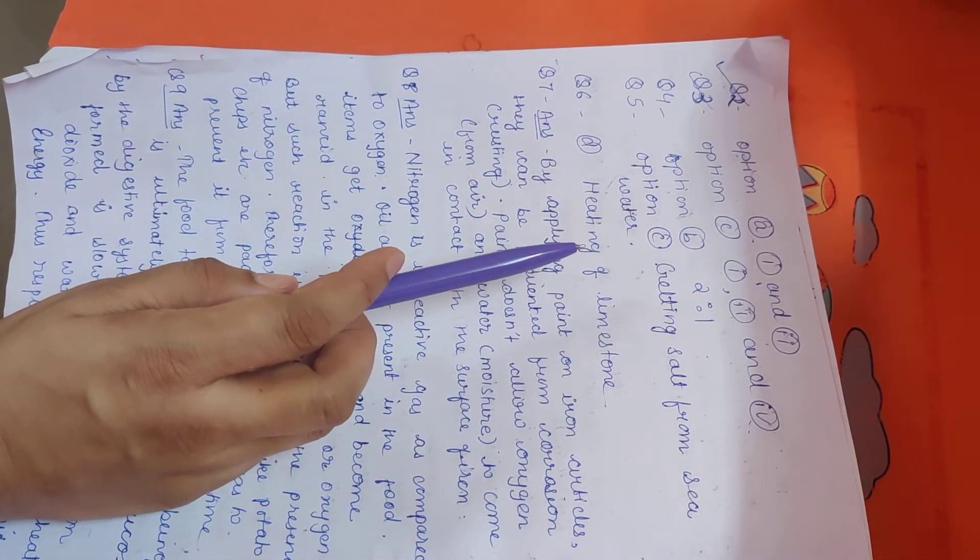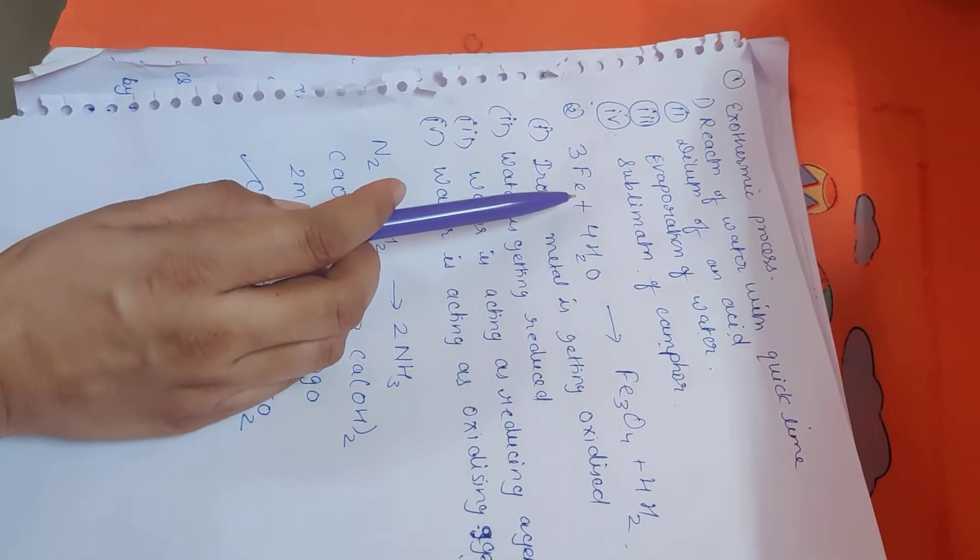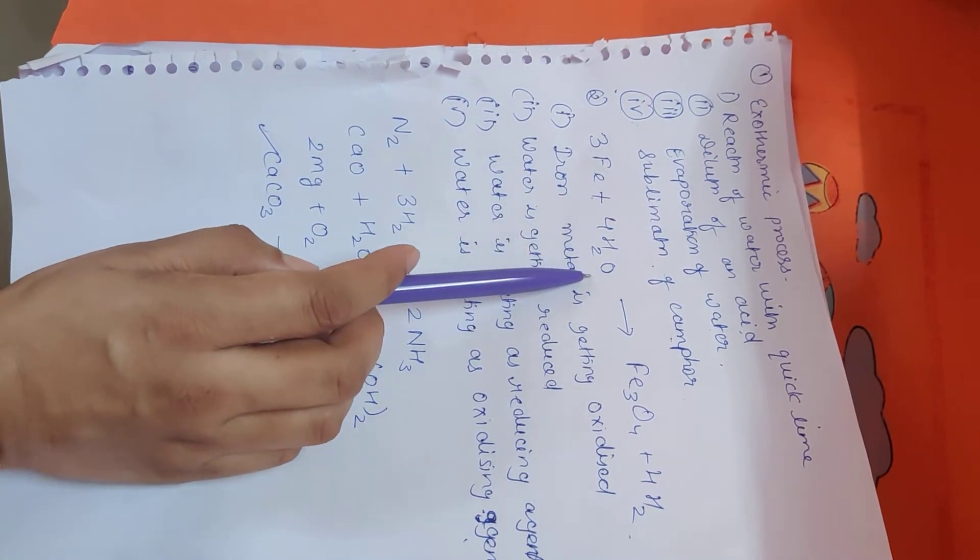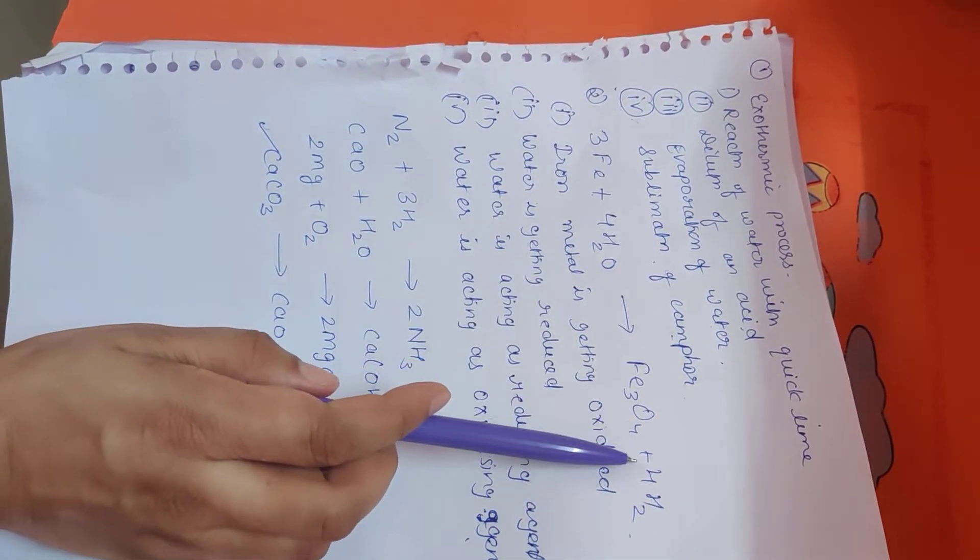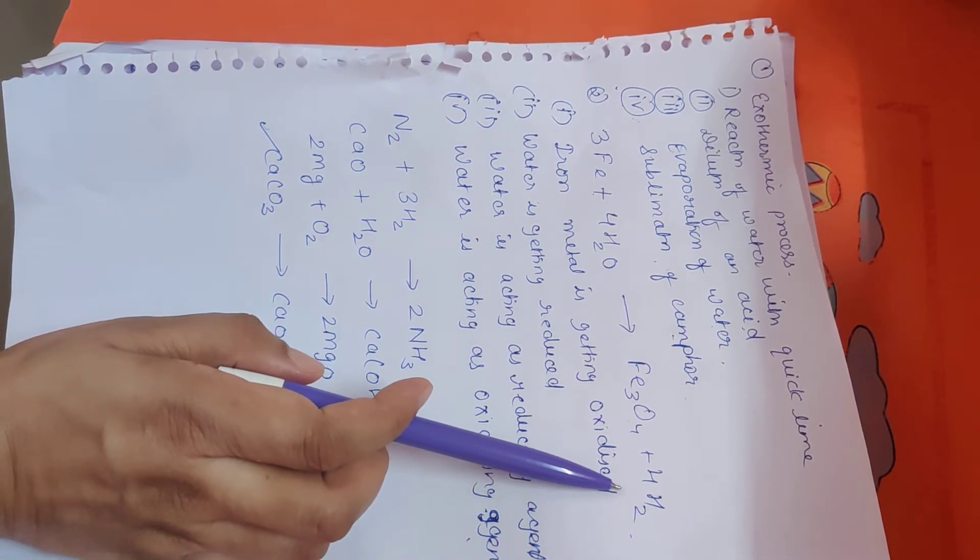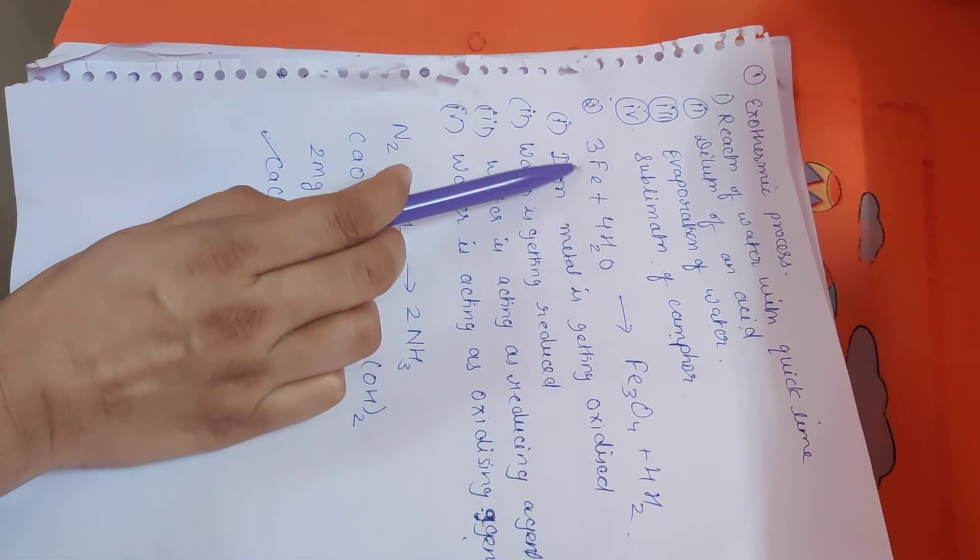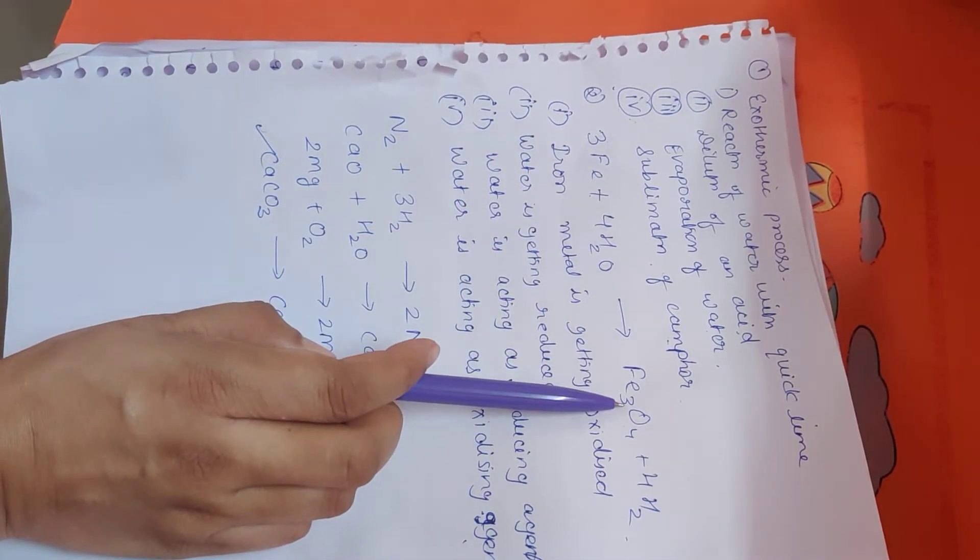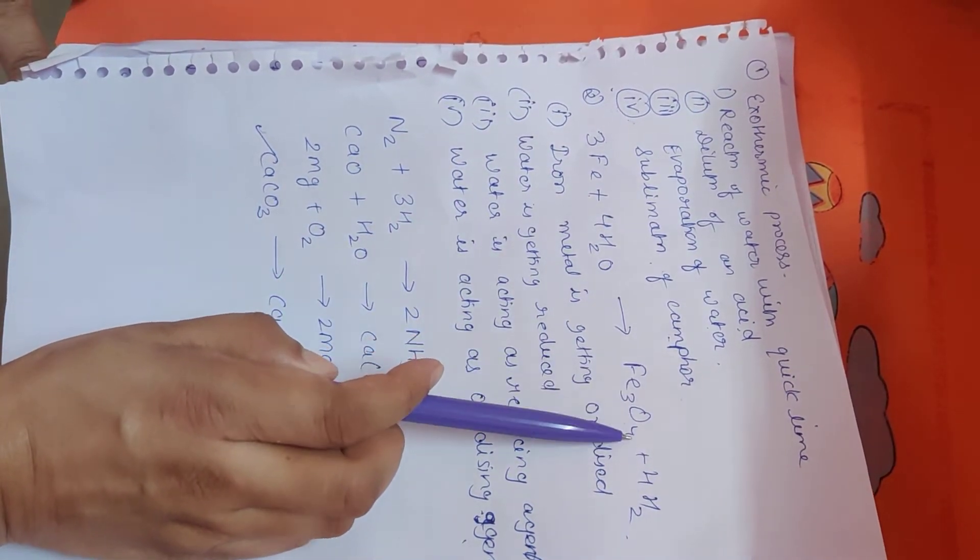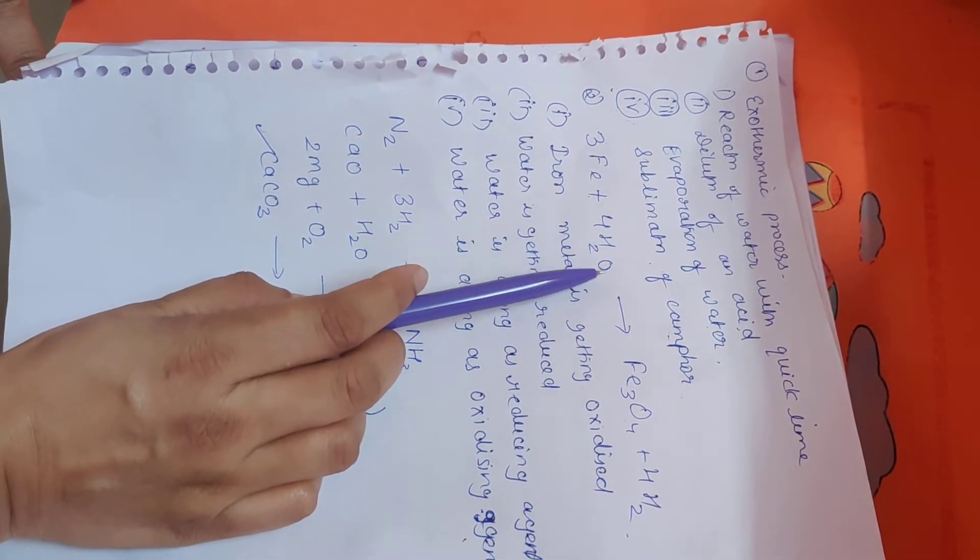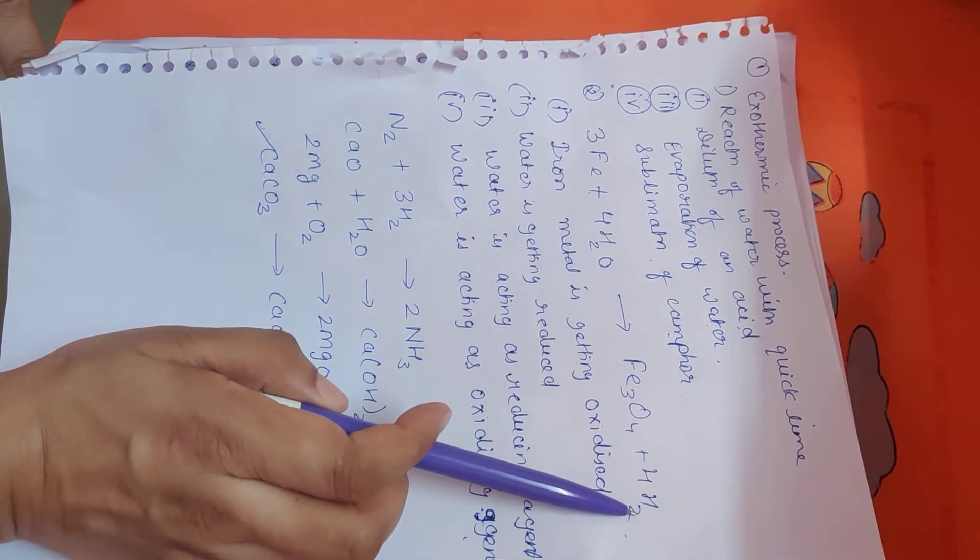So the next question, which of the following statements about a given reaction are correct? So this was the reaction: 3Fe plus 4H2O gives Fe3O4 plus 4H2. Students, all of you look carefully. Here, the iron metal is getting oxidized and it will form Fe3O4.